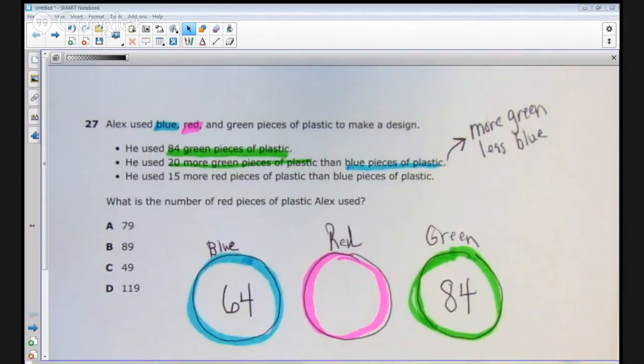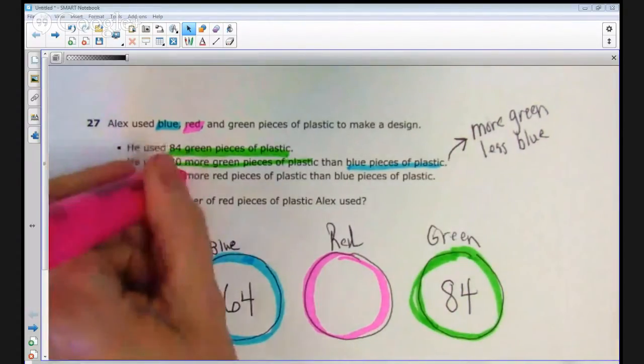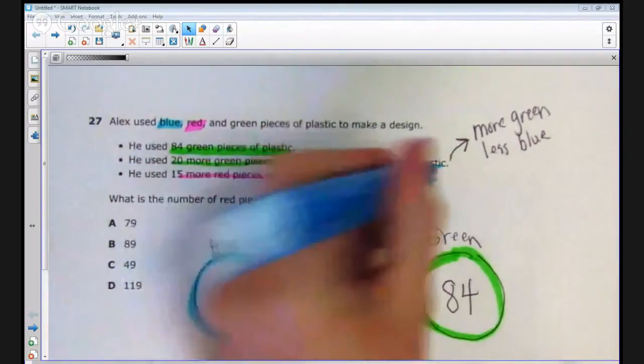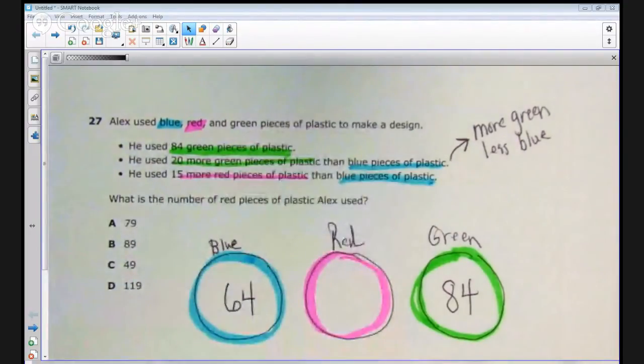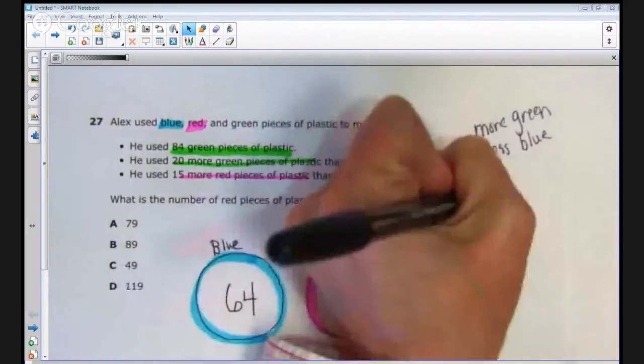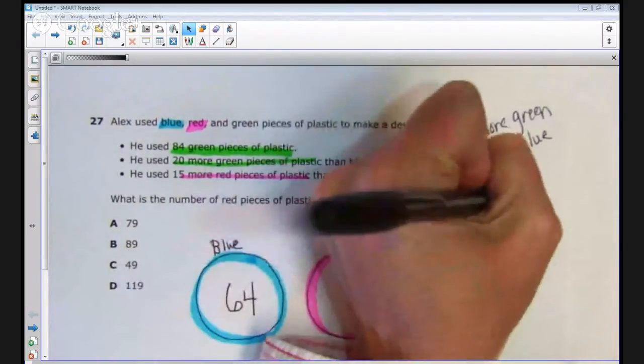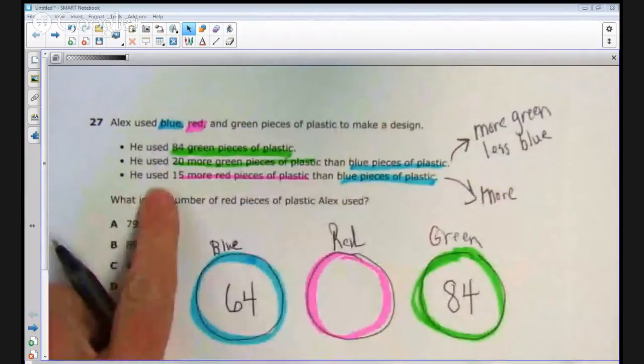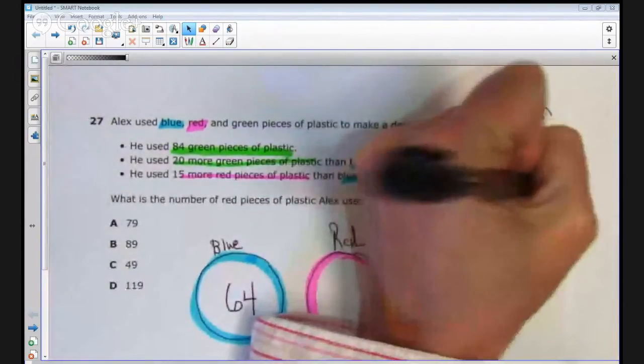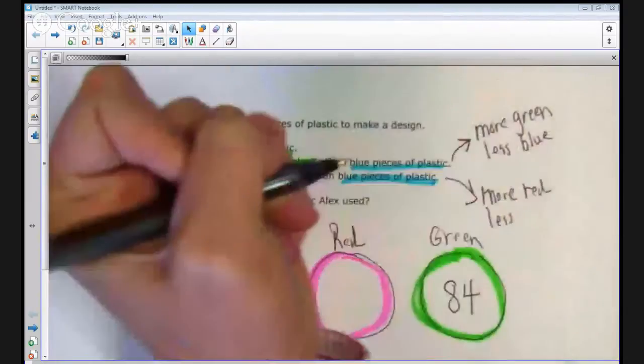He used 15 more red pieces of plastic, more red pieces of plastic, than blue pieces of plastic. So, more red, less blue. So, I'm going to make a little statement that's just kind of shorthand, leaving out a lot of the other words. More red, less blue.